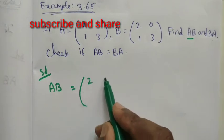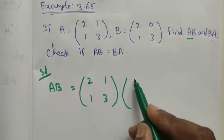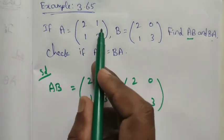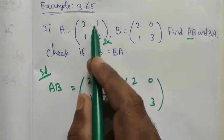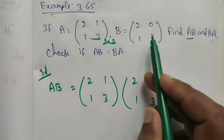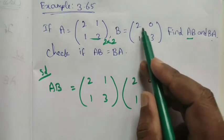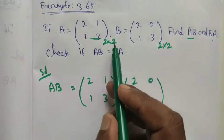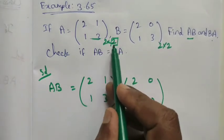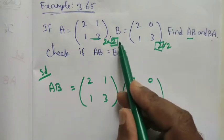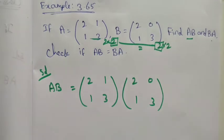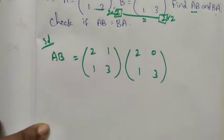The matrix A is [2, 1; 1, 3] and matrix B is [2, 0; 1, 3]. First we check the order of each matrix — both are 2 by 2. Since the number of columns in the first matrix equals the number of rows in the second matrix, multiplication is possible.